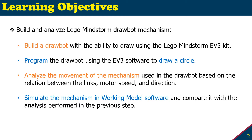We will analyze based on the relationship between the links, motor speed, and direction. Finally, we will simulate the same mechanism created for the drawbot in Working Model software, which you learned in Lab 2, and compare the simulation with the analysis done in the previous step.